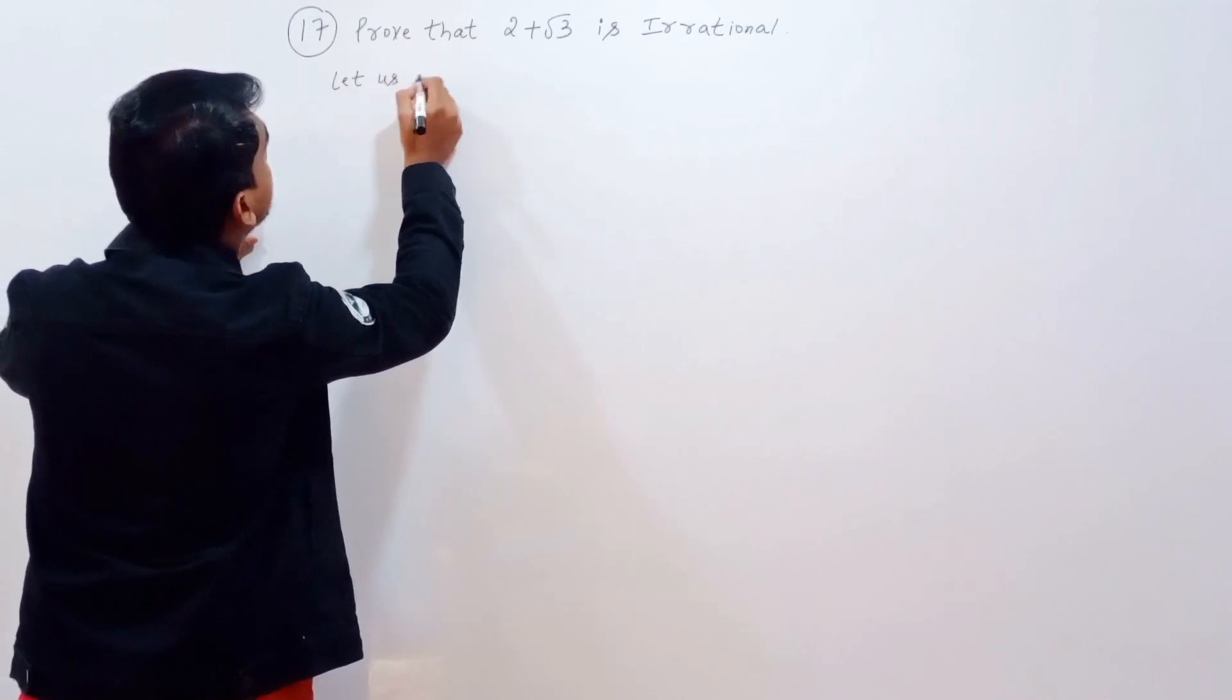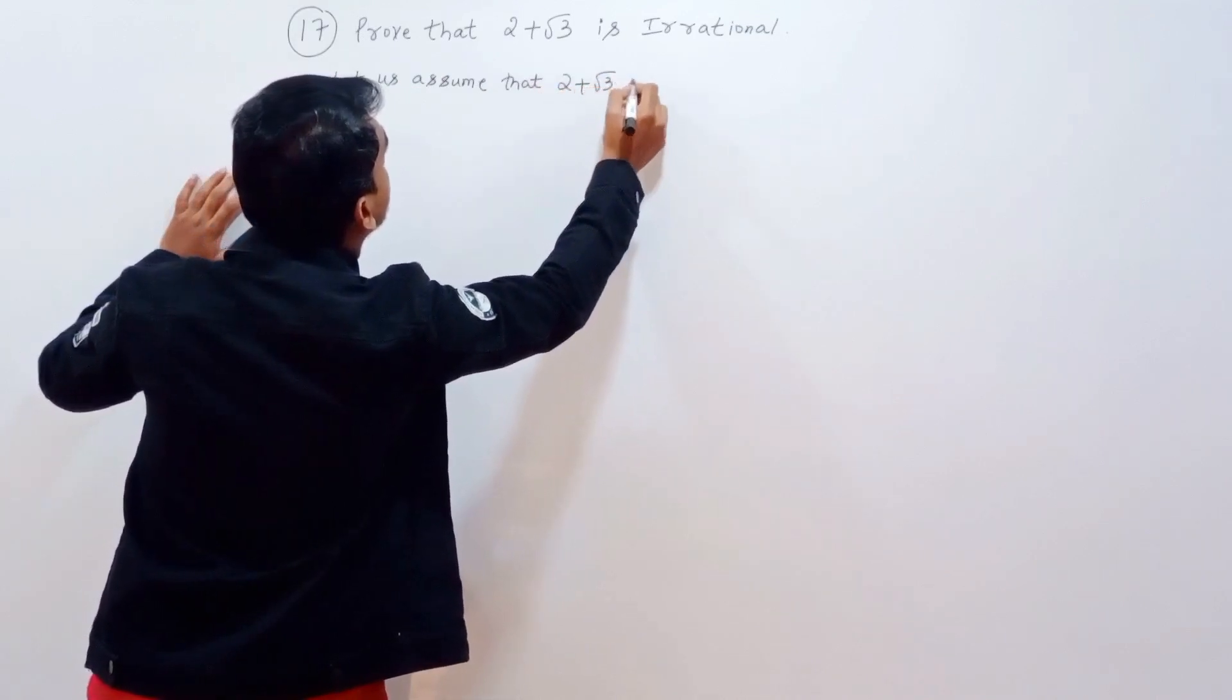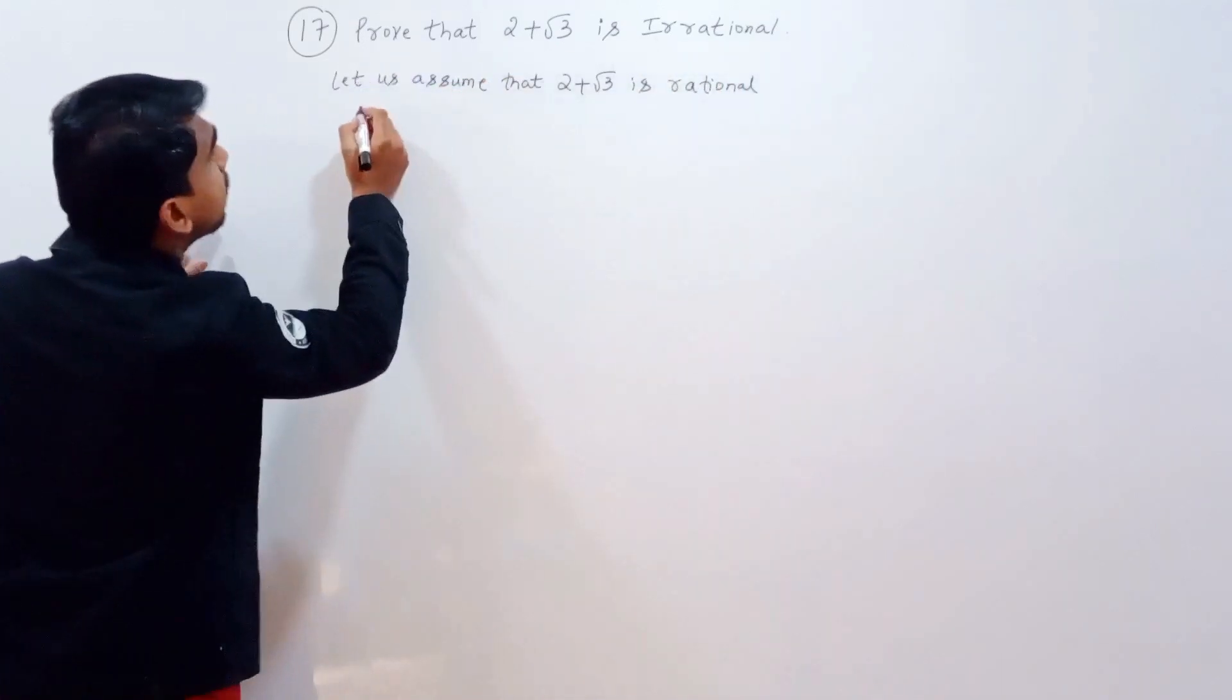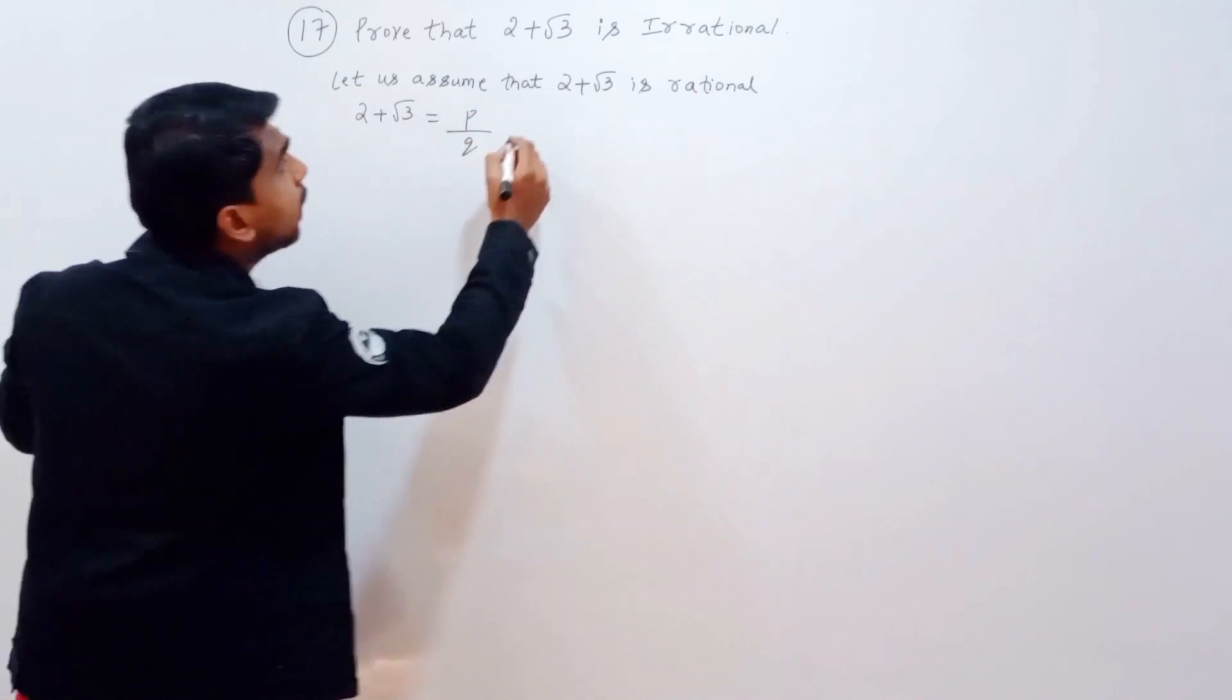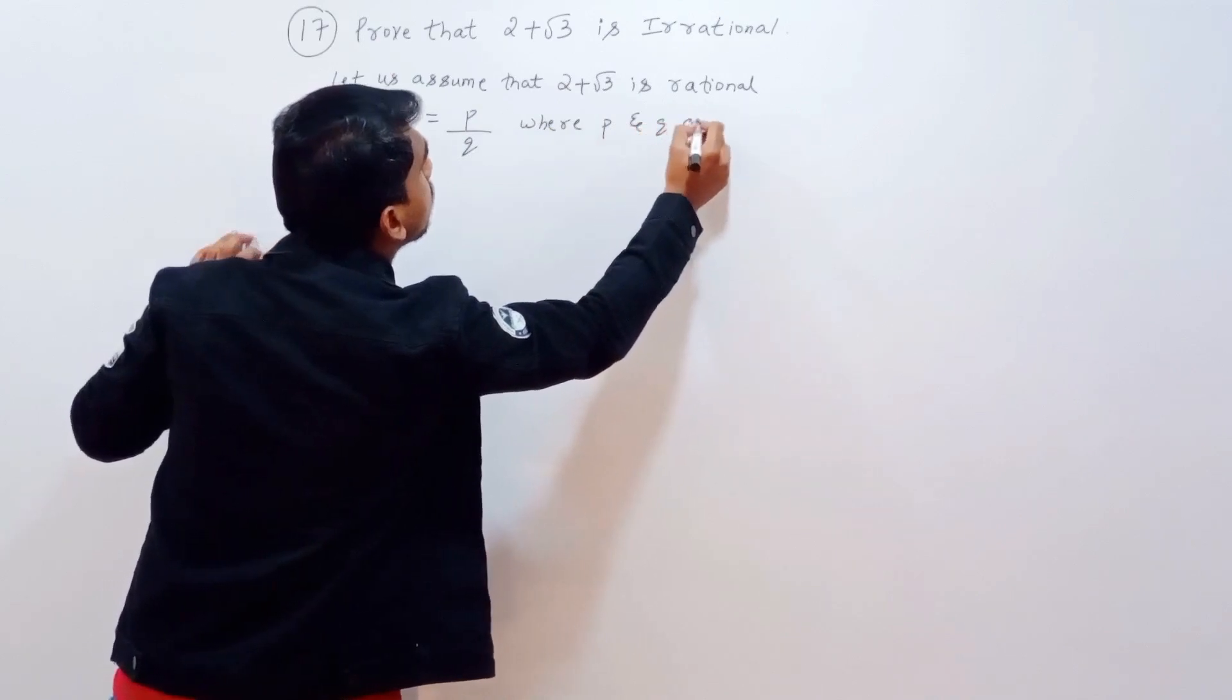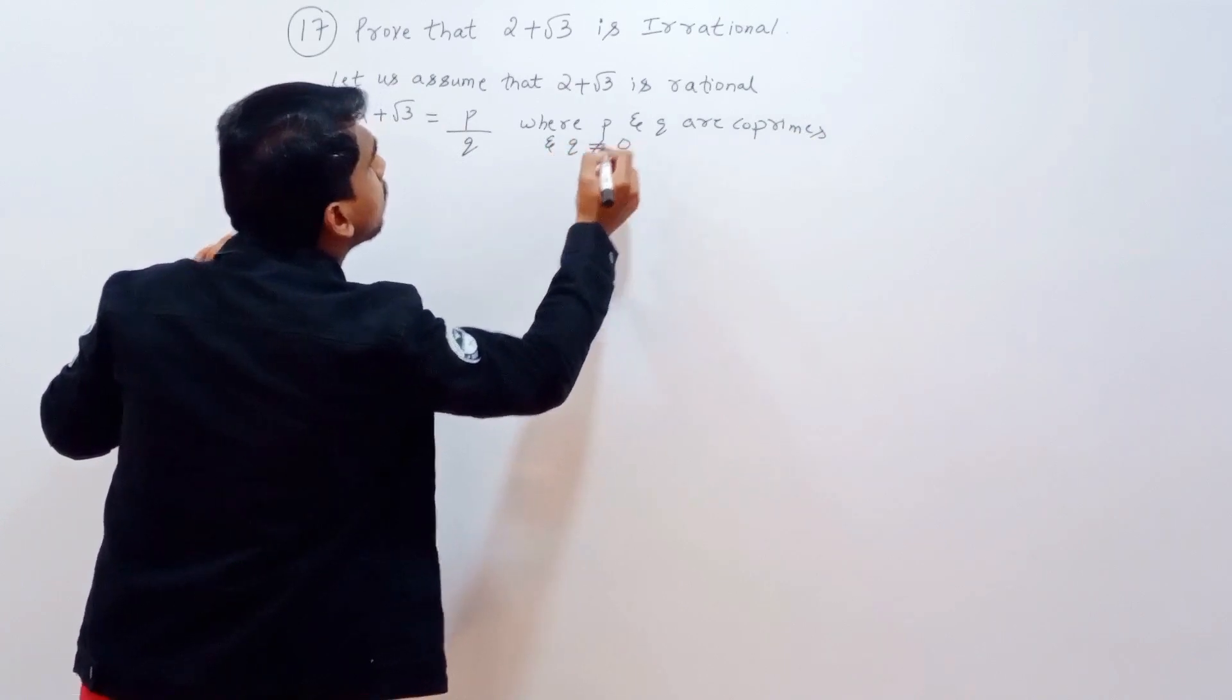First, let us assume that 2 plus root 3 is rational. A rational number is of the form p by q where p and q are co-primes and q not equal to 0.